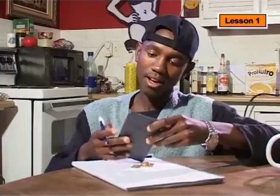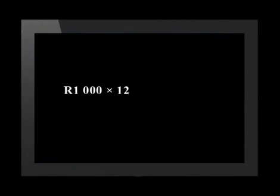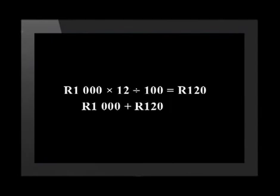Time to use our calculators. Are you ready? On your calculator, put in R1,000 — that's the amount you're going to invest. Now press multiply by 12 and either push the percentage button or divide by 100. You'll get an answer of R120. That means that after a year, you will have earned R120 in interest, which is automatically added to the money in your account. So altogether, you've now got R1,120.